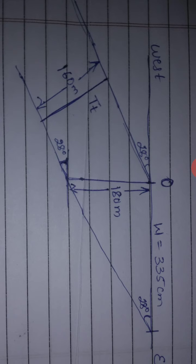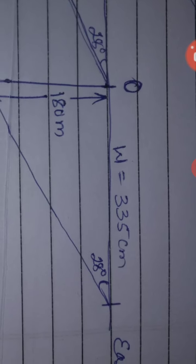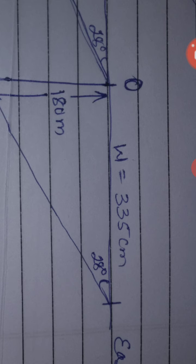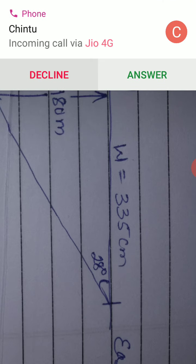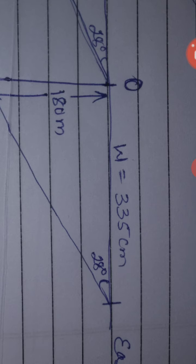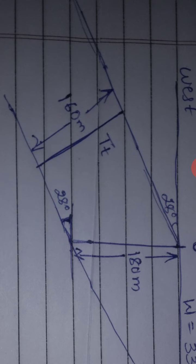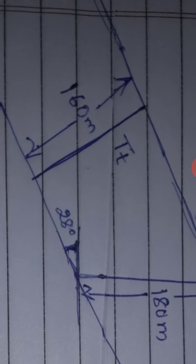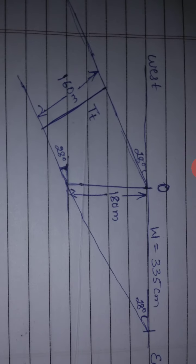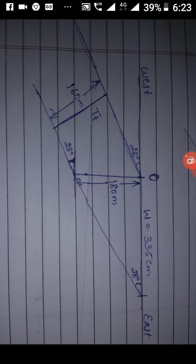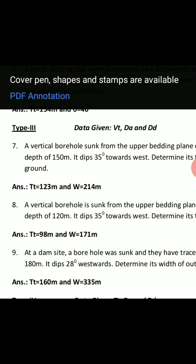With these upper and lower bedding planes, the width of outcrop is 335 meters — that is 3.35 centimeters on the scale drawing. The true thickness is 160 meters, which is 1.6 centimeters on the drawing. So the answer is: true thickness TT = 160 meters and width W = 335 meters.